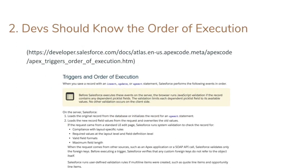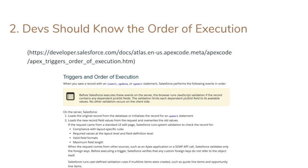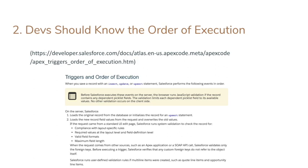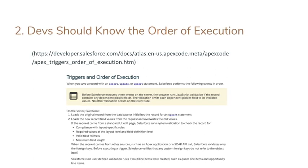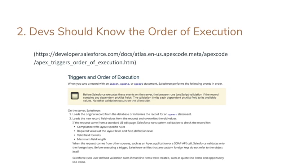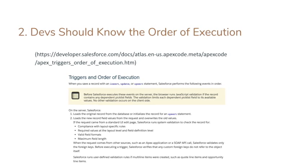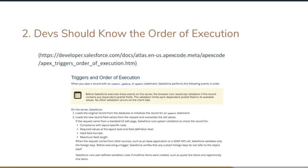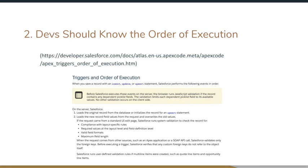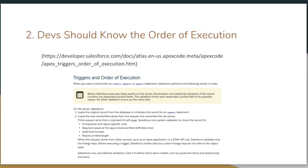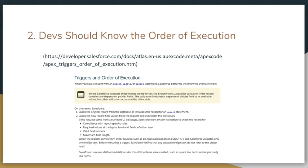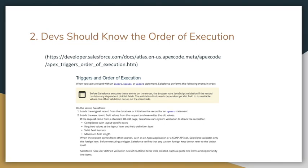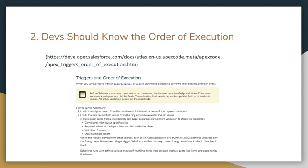Next up, all Salesforce devs should know the order of execution. The Salesforce order of execution is the order in which each piece of automation will be executed when you save a record. There are 22 steps in the order of execution and some of them can execute twice. You need to know the order of execution because sometimes you'll have multiple pieces of automation and they won't do what you expected because you expected them to execute as A, B, C, D — and instead they're executing as D, A, C, B. So memorize the order of execution if you can, and save it as a bookmark if you can't.